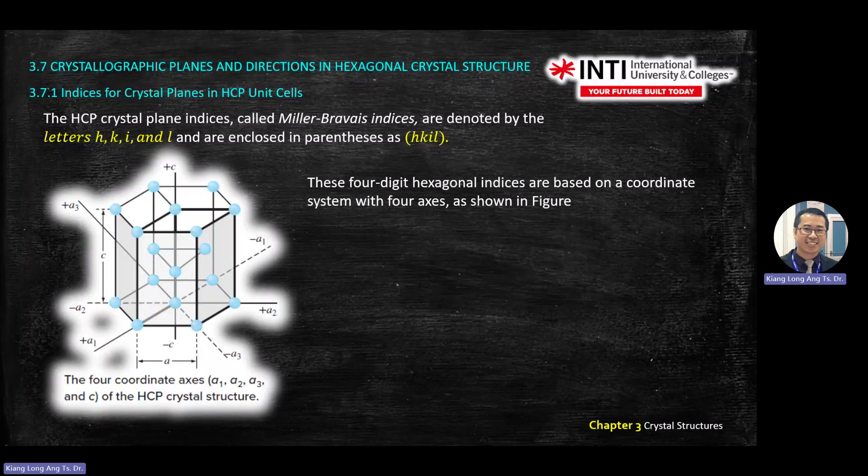Today we extend into HCP crystal structure. So HCP: on the top you got 7, below you got 7, then you got 3 in the middle.